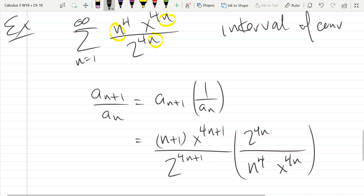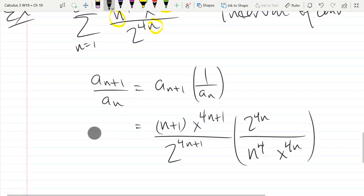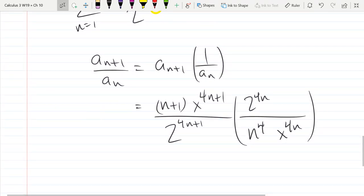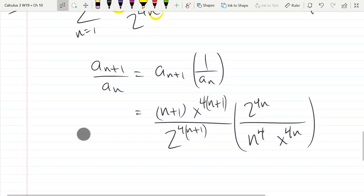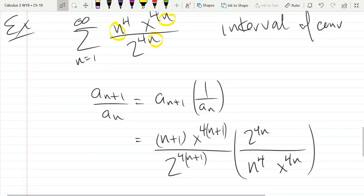What mistake did I make? I think n plus 1 in the numerator is supposed to be raised to 4. Yeah, so I did not group up properly, so I need to distribute my 4 across all these. So in the first n plus 1 in the numerator, it's supposed to be raised to 4.